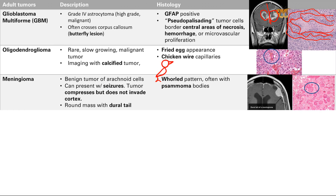Next is meningioma. This is not a tumor of the brain cells itself; it's a tumor of the meninges, which I think of as a wrapper for the brain — it surrounds the brain but is not part of it. This is a benign tumor. It can compress the brain but does not invade the cortex, and it can compress the brain and cause seizures.